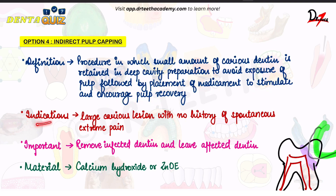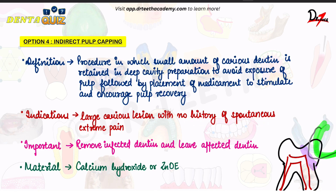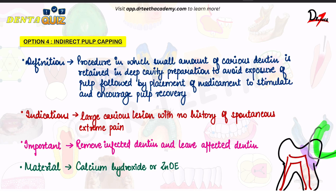The indications are that it has to be a large caries lesion with no history of spontaneous or extreme pain. This point is important — if the patient complains of spontaneous pain, then you cannot do indirect pulp capping. The important thing to note is that we leave the carious dentine behind, so basically we remove the infected dentine and we leave the affected dentine.